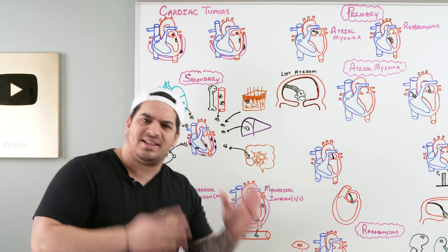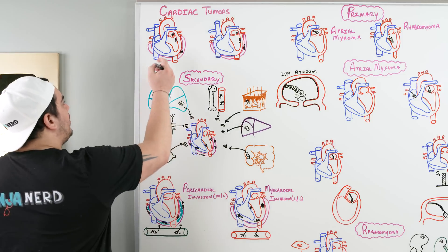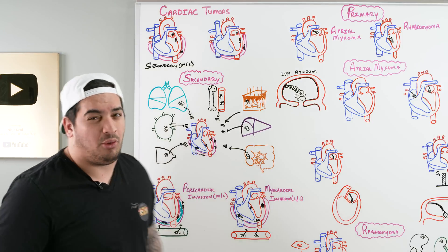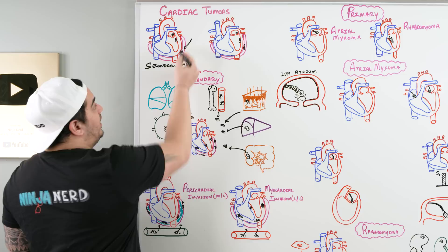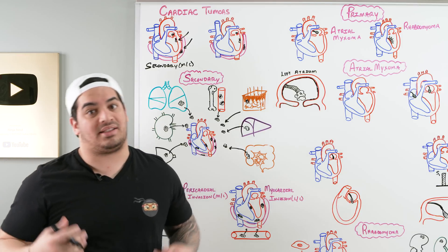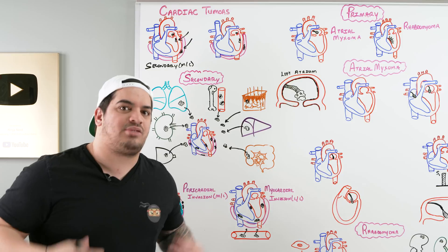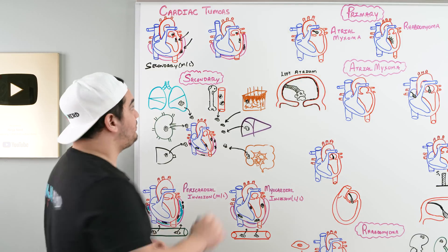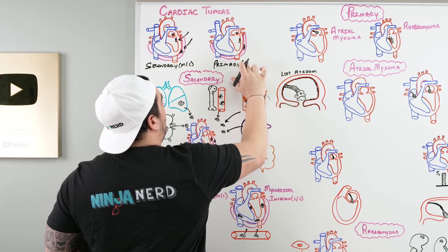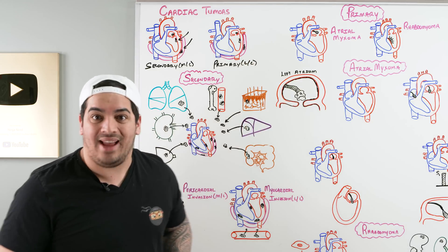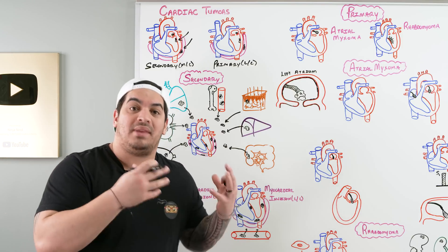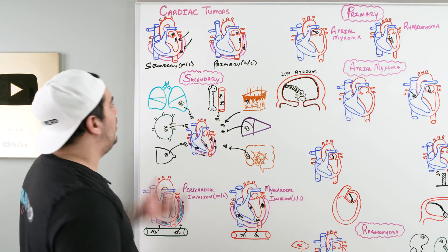When we talk about cardiac tumors, we have to understand there are secondary cardiac tumors and primary cardiac tumors. Secondary cardiac tumors are by far the most common type — these came from some other area, infiltrating the pericardium or myocardium from a distant source like lung, breast, or kidney. Primary tumors are relatively rare and actually form from the cardiac tissue itself — the two types are myxoma and rhabdomyoma.